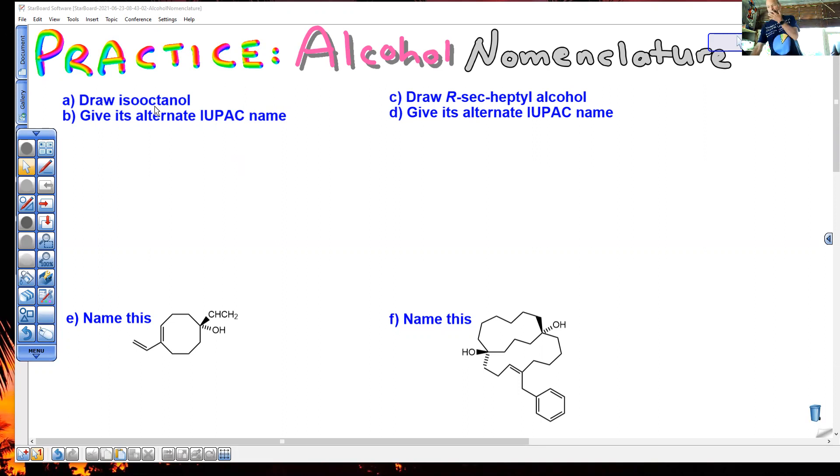It's the last thing we learned how to name - alcohols. We didn't get a lot of practice because it's the last thing, but that doesn't mean it's unimportant. Draw isooctanol. This is one way of naming alcohols using the common system. You draw an isooctyl group attached to OH.